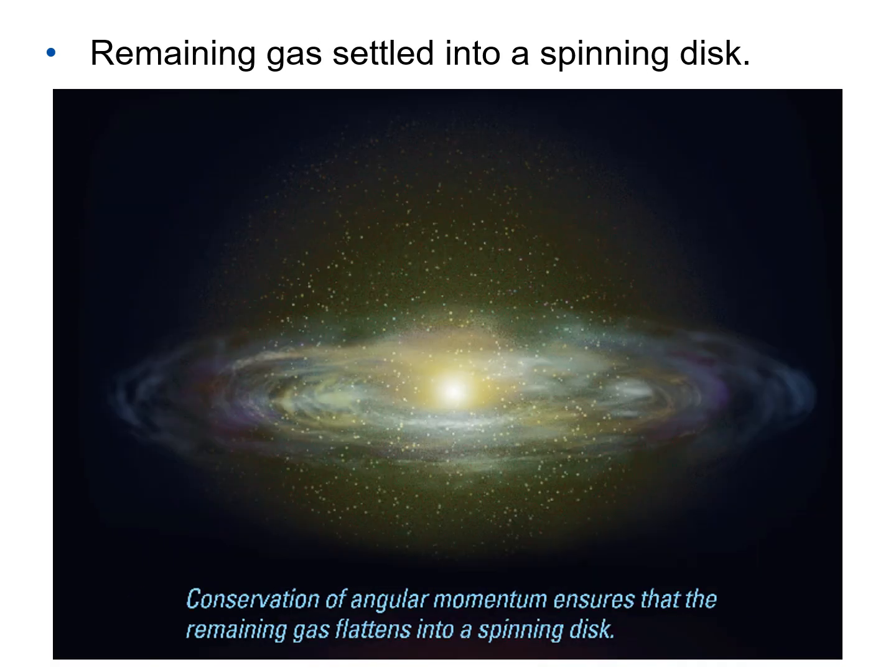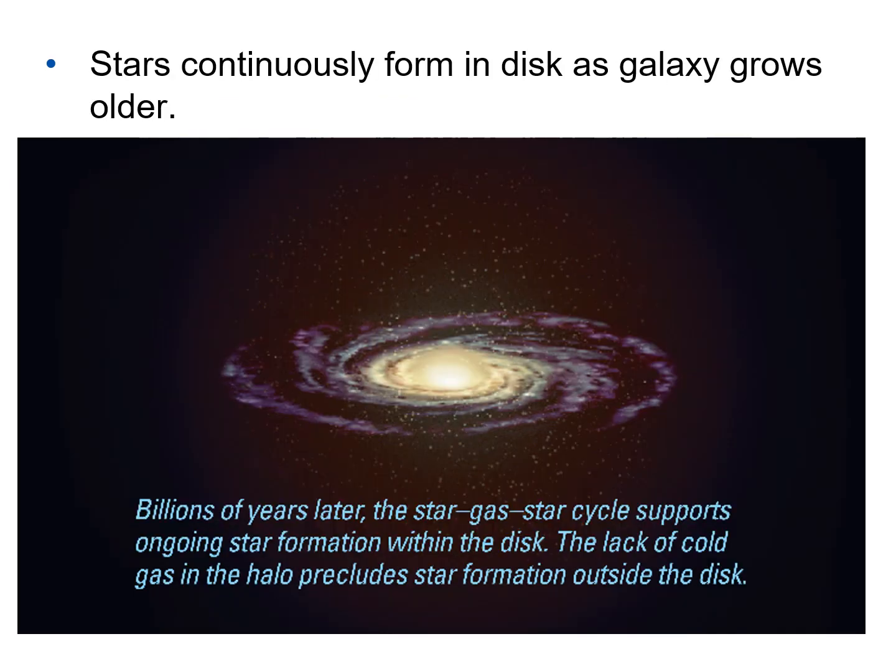As the protogalactic cloud contracts, the gas that has not yet formed into halo stars begins to settle into a spinning disk — in exactly the same way as a protostellar cloud collapses to become a star system. Conservation of angular momentum ensures that the remaining gas flattens into a spinning disk. Once that gas has flattened into a disk, it forms into stars, which become disk stars. Stars continuously form in the disk as the galaxy grows older, and the star-gas-star cycle supports ongoing star formation within the disk. The lack of cold gas in the halo precludes star formation outside the disk.